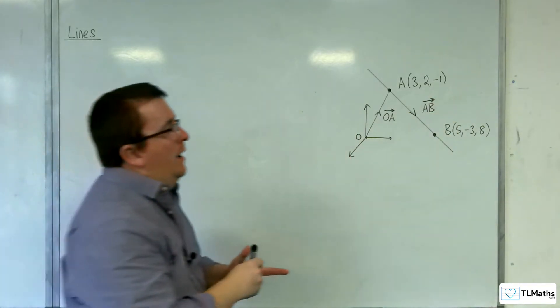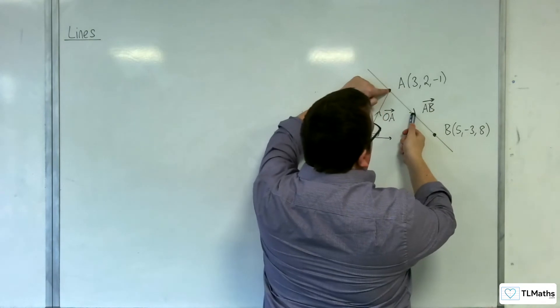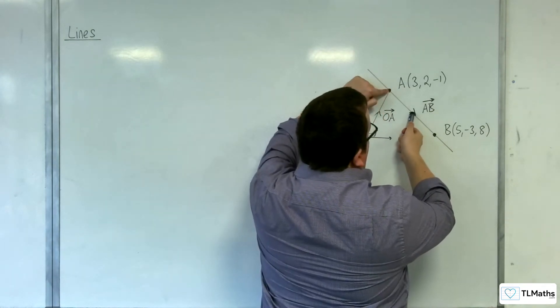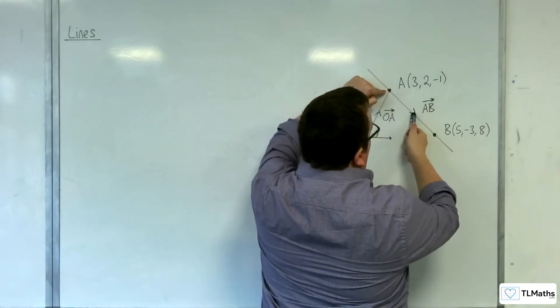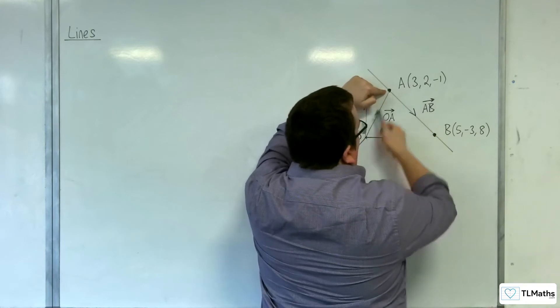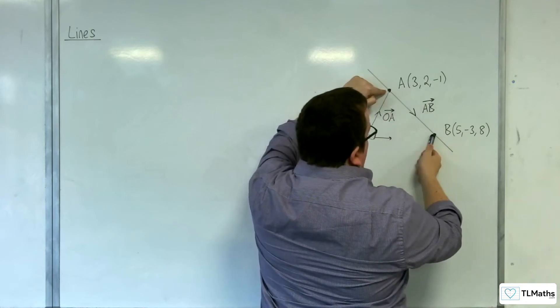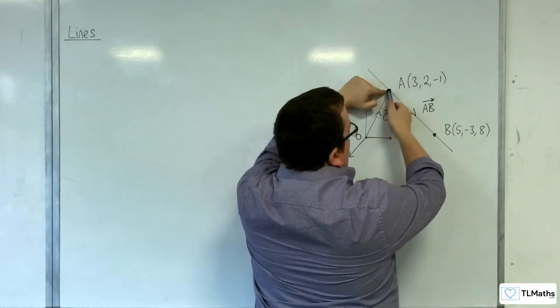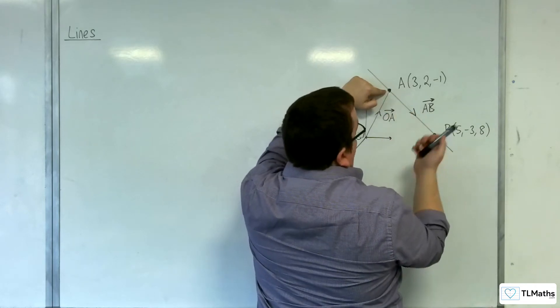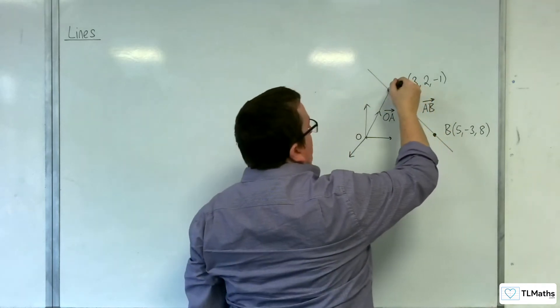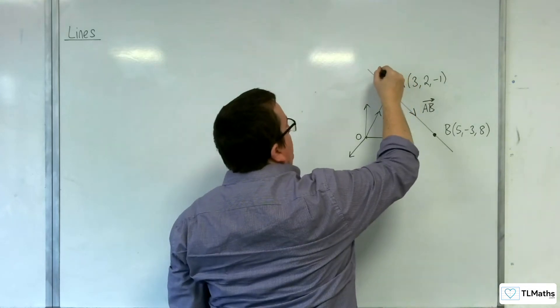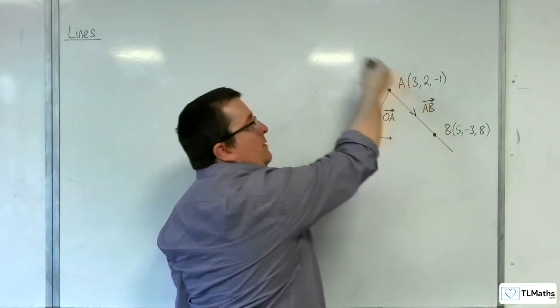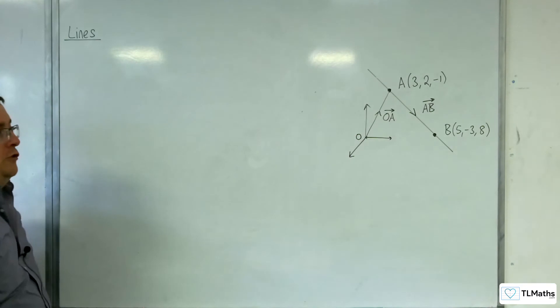So if I want half of AB, that will get me to that point there. So OA plus a half of AB will get me there. OA plus one lot of AB will get me there. OA plus or take away 0.3 lots of AB will get me here. So I can get to any point on the line using those two pieces.